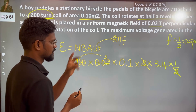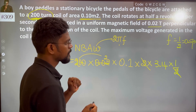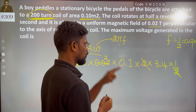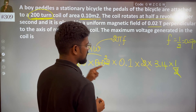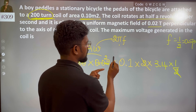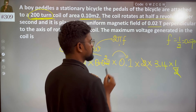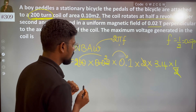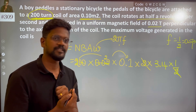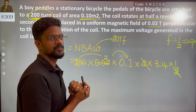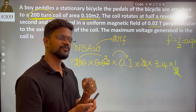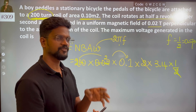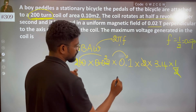In the middle of the calculation we get 4. That 4 is then multiplied by 0.1, which gives 4 into 0.1, becoming 0.4.